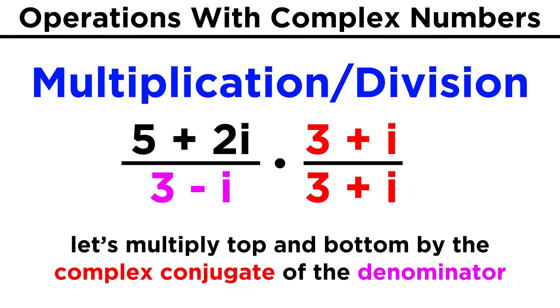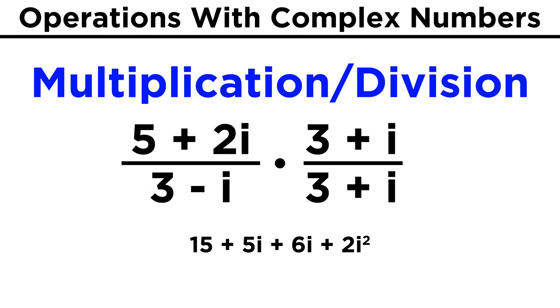But now we can FOIL the bottom and the top. Let's do the top first, fifteen plus five i, plus six i, plus two i squared. We combine these to get eleven i, two i squared becomes negative two, and we end up with thirteen plus eleven i.